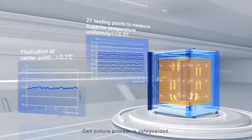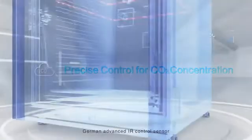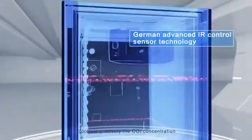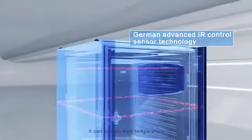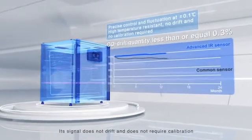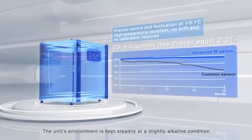Cell culture process is safeguarded. German advanced IR control sensor controls precisely the CO2 concentration. It can sustain high temperature. After its signal does not drift and does not require calibration, the unit's environment is kept steadily at a slightly alkaline condition.